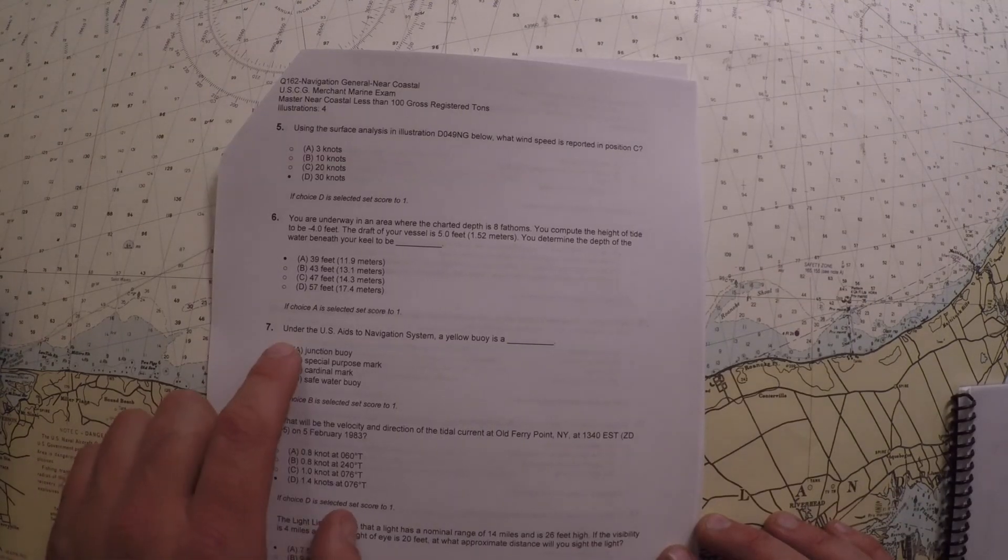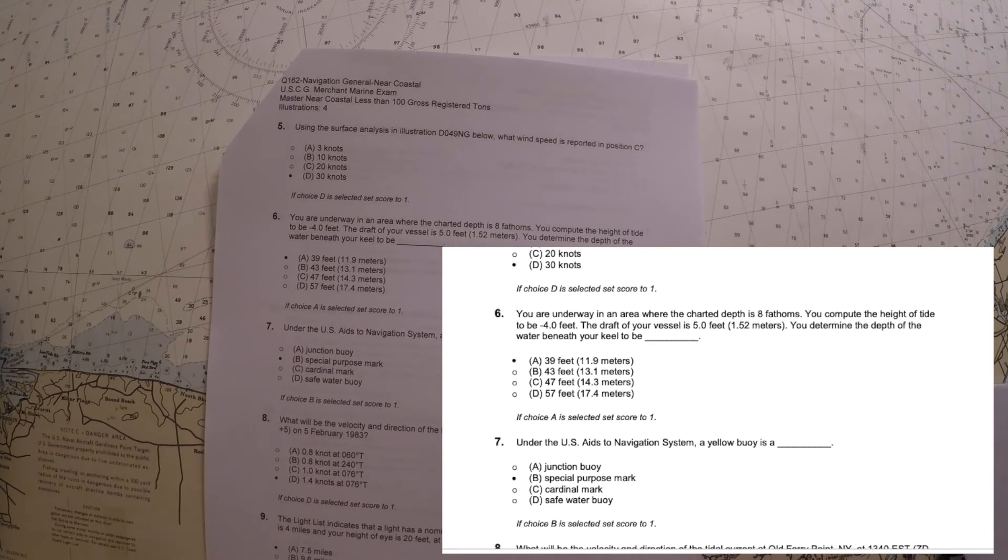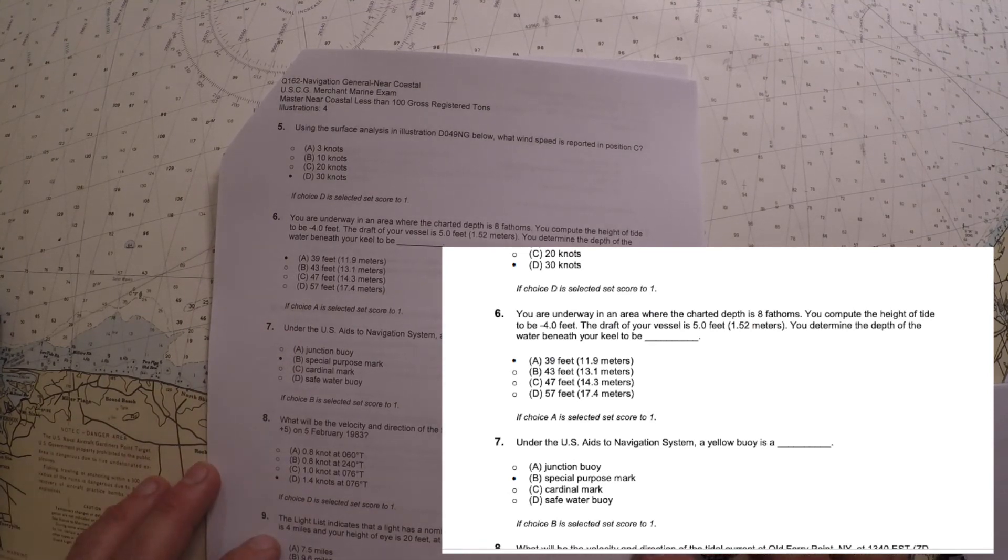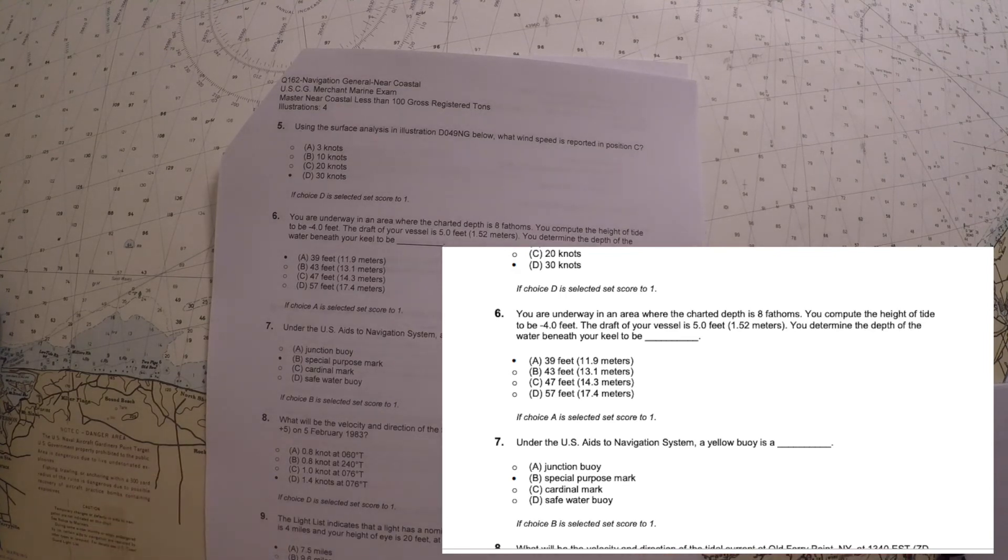So for our next question here, number seven. Under the US Aids to Navigation System, a yellow buoy is what? A junction buoy, a special purpose mark, a safe water mark, or a cardinal mark?